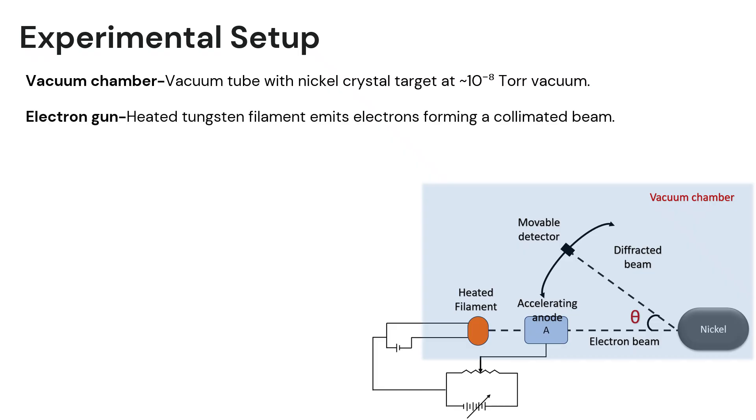Another component used in this setup is the electron gun. A heated tungsten filament emits electrons via thermionic emission process. High voltage is applied to the filament, which acts as the cathode, and anode to accelerate the electrons. The electrons produced have well-defined kinetic energy which can be controlled by adjusting the accelerating voltage.